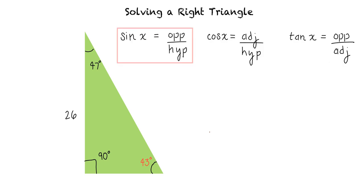We must remember that the sine of x equals opposite over hypotenuse, the cosine of x equals adjacent over hypotenuse, and the tangent of x equals opposite over adjacent.